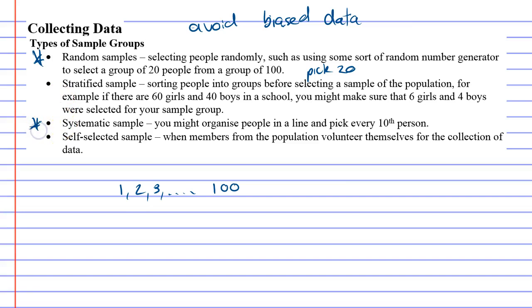Systematic sample is a really simple one. You just organize your people into a line. You can organize them and even number them from 1 to 100, and then you might just pick every tenth person or every fifth person. So you just pick person 10, person 20, person 30, and so on. That's a systematic sample. It's a really basic one to do.